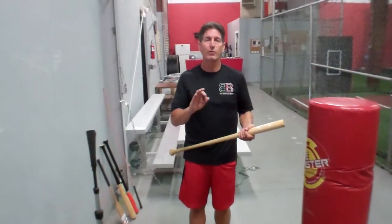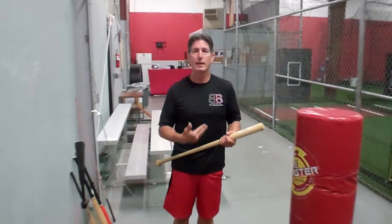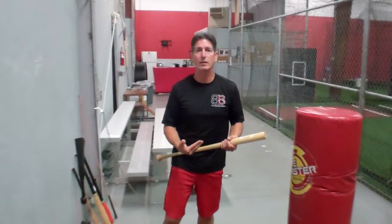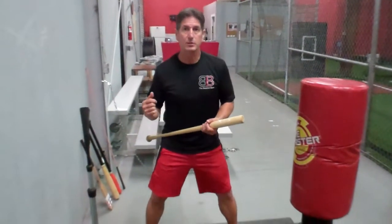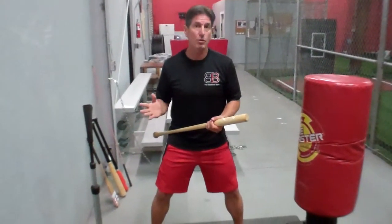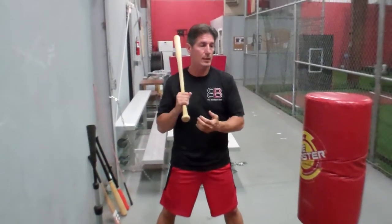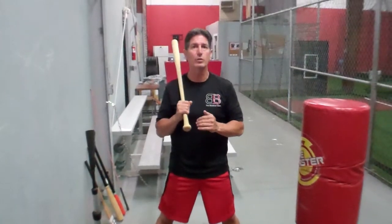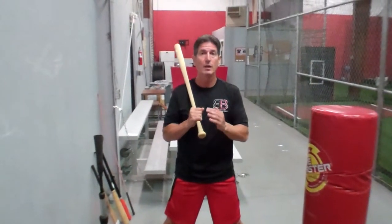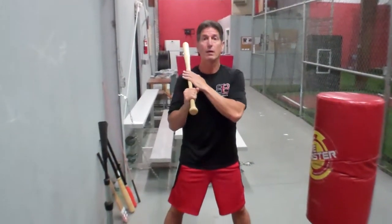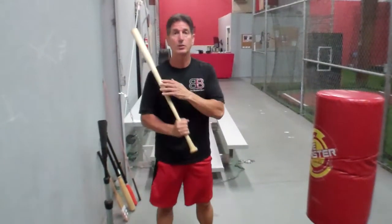There are very small differences. Technique-wise, everything's the same. We can either teach a stride or no stride. We can teach basically a weight shift with no stride. There's a lot of things that we do similar, if not exactly the same, with a baseball swing. The difference lies in the plane of the bat to the plane of the pitch.